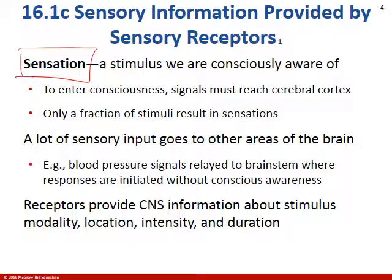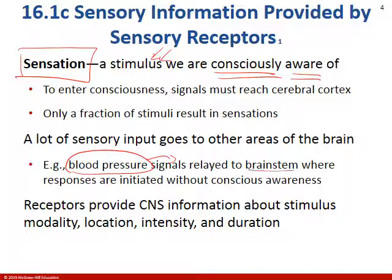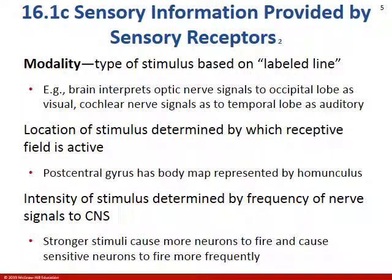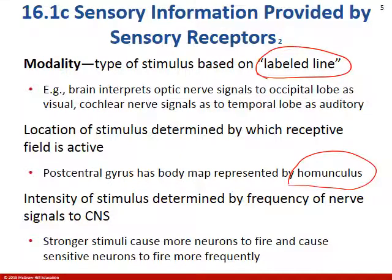The term sensation is when we're consciously aware of a stimulus. There are tons of sensory signals going to the brainstem that we're not consciously aware of — we don't know what our blood pressure is right this moment. The things we're usually consciously aware of are the signals that reach the cerebral cortex, and that's only a fraction of the stimuli we take in every day. Remember this labeled line — we talked about the homunculus, and there are specific areas or receptive fields in the cerebral cortex mapped to different areas of the body.